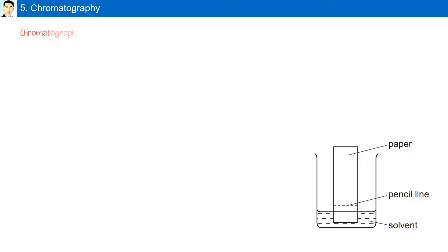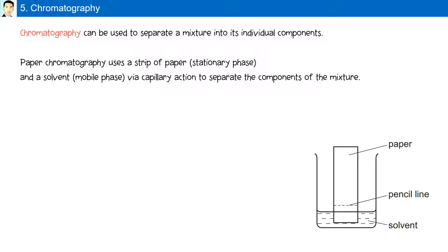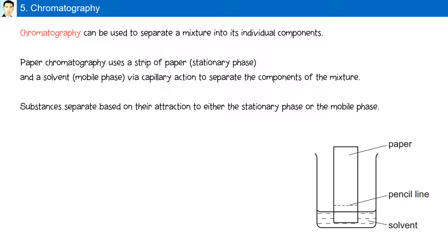Chromatography can be used to separate a mixture into its individual components. Paper chromatography uses a strip of paper, known as the stationary phase, and a solvent known as the mobile phase. Via capillary action, it is used to separate the components of the mixture. Substances separate based on their interaction with either the stationary phase or the mobile phase. The physical properties used are solubility and molecular polarity.